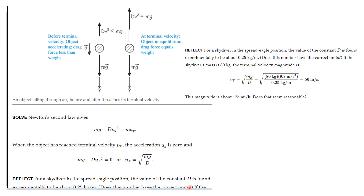For a skydiver in spread-eagle position, the drag constant D = 0.25 kilograms per meter. For an 80-kilogram person with g = 9.8 m/s², the terminal velocity is the square root of (80 times 9.8 divided by 0.25), which gives 56 meters per second — about 125 miles per hour. So objects can reach quite high terminal velocities when falling through air.